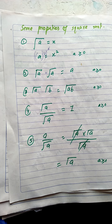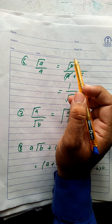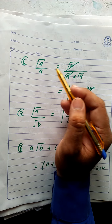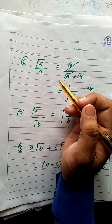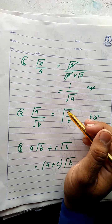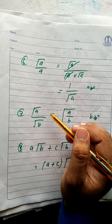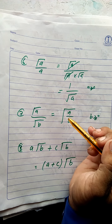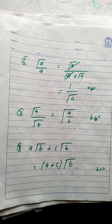Property number six: under root a divided by a. We replace a in the denominator with under root a times under root a. Then one under root a cancels with the numerator's under root a, leaving one upon under root a. This is property number six. Property number seven: under root a divided by under root b equals under root a over under root b, since the bases are different.